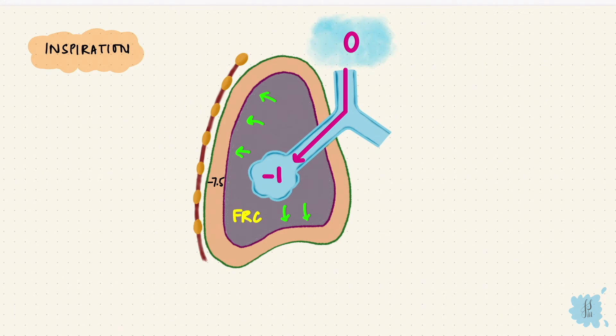At the end of inspiration, the alveolar pressure goes back up to zero. So now 500 ml of air has entered the lungs. And the volume in the lungs would now include both the functional residual capacity, and the tidal volume.